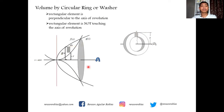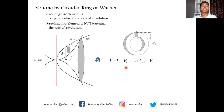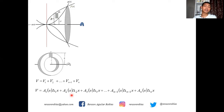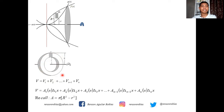By applying the Riemann sum, the volume of the entire solid is V = V₁ + V₂ + ... + Vₙ. Since volume equals area of the base times height, we rewrite: V = A₁(x)·Δ₁x + ... + Aₙ(x)·Δₙx. The area of each ring is the area of the outer circle minus the area of the inner circle: A = π(R² − r²).